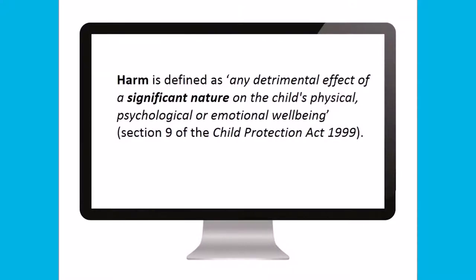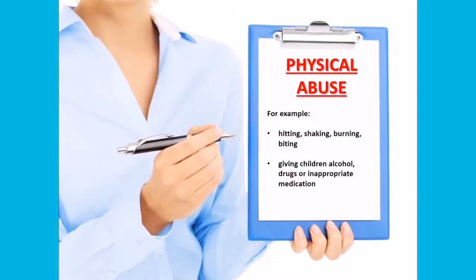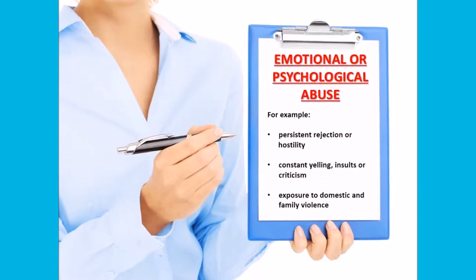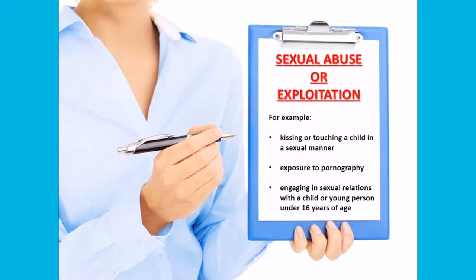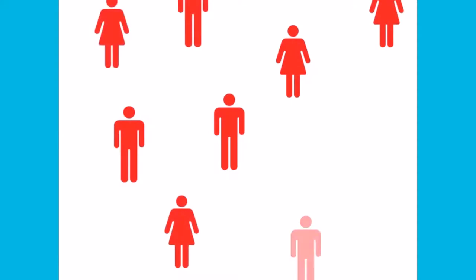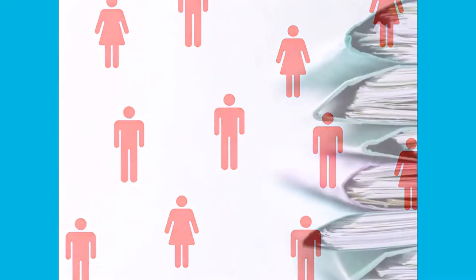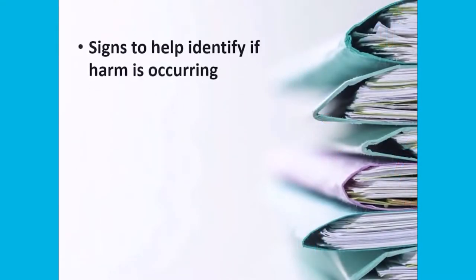First, we will look at defining and then identifying harm. Harm is defined as any detrimental effect of a significant nature on the child's physical, psychological, or emotional well-being. Harm may arise from the following types of abusive behaviors: physical abuse, emotional or psychological abuse, neglect, and sexual abuse or exploitation. It is also important to remember that harm can be caused by a single act or omission or a series of acts or omissions.